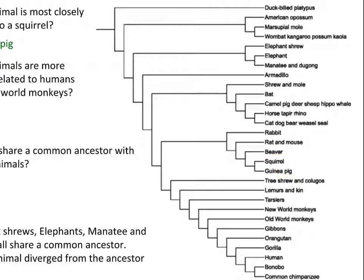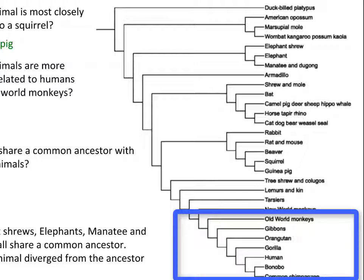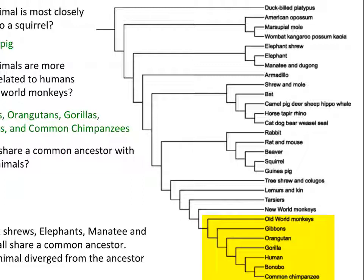Next: what animals are more closely related to humans than old world monkeys? If you said gibbons, orangutans, gorillas, bonobos, and common chimpanzees, then you are correct. This is because old world monkeys share a common ancestor with the others but diverged from the common ancestor the earliest. They are all a part of the same clade, however.